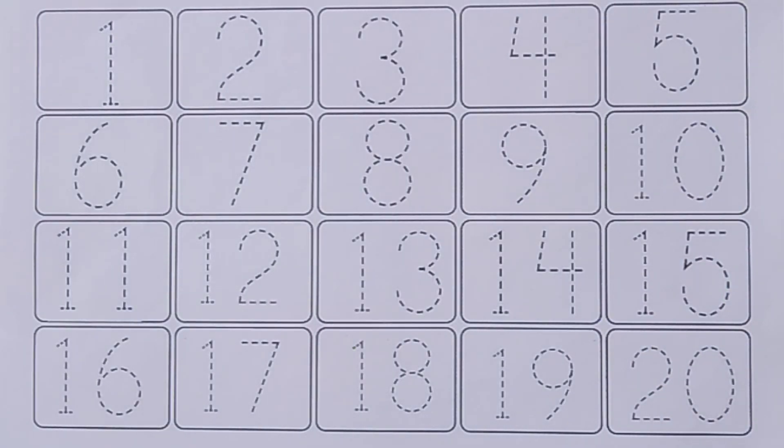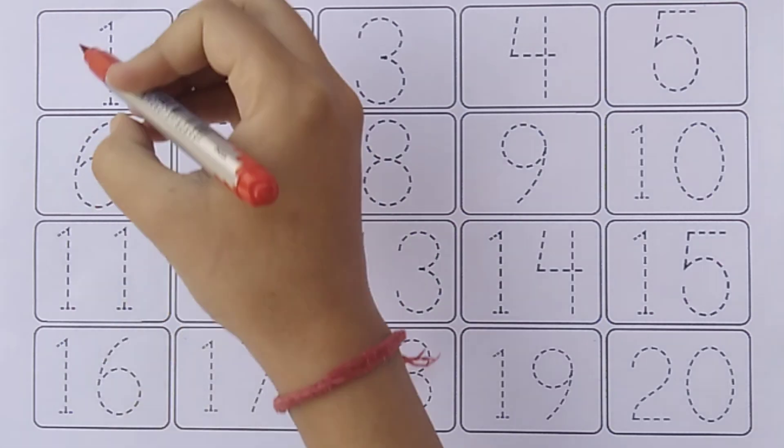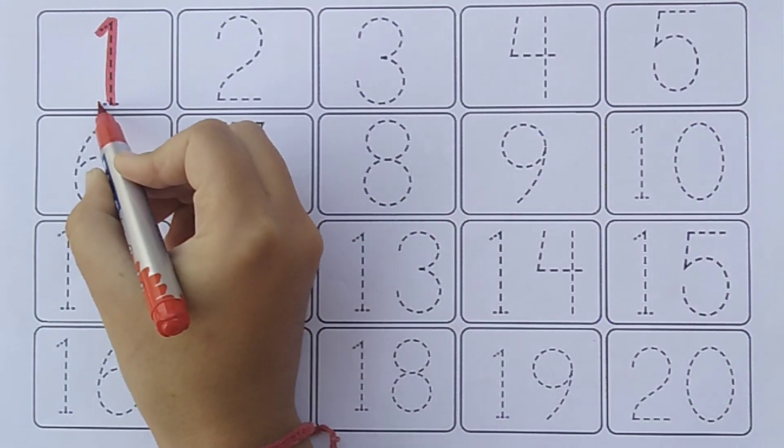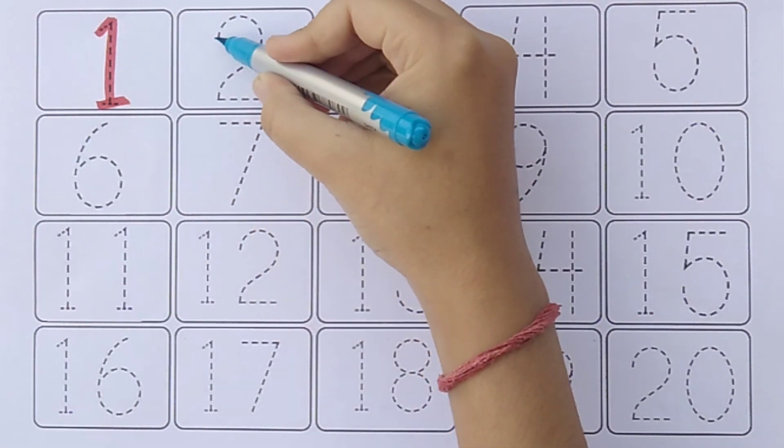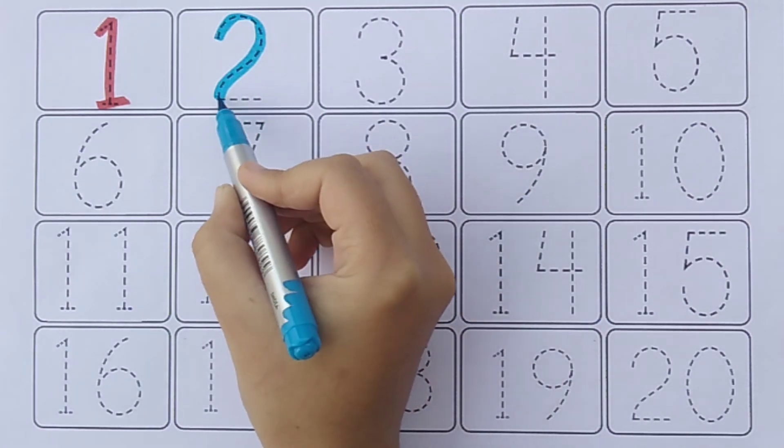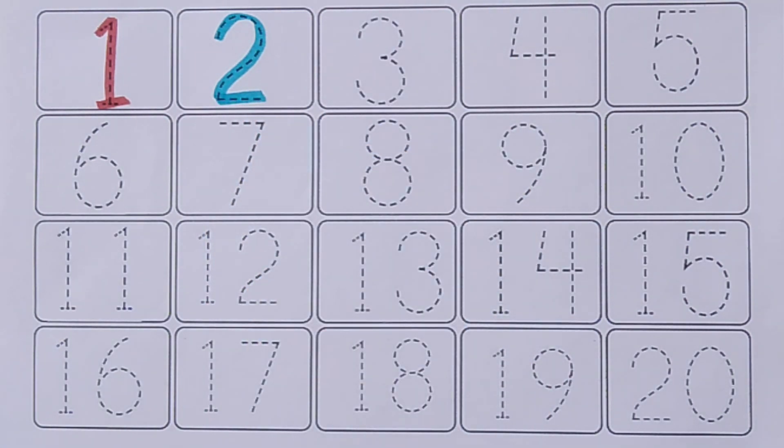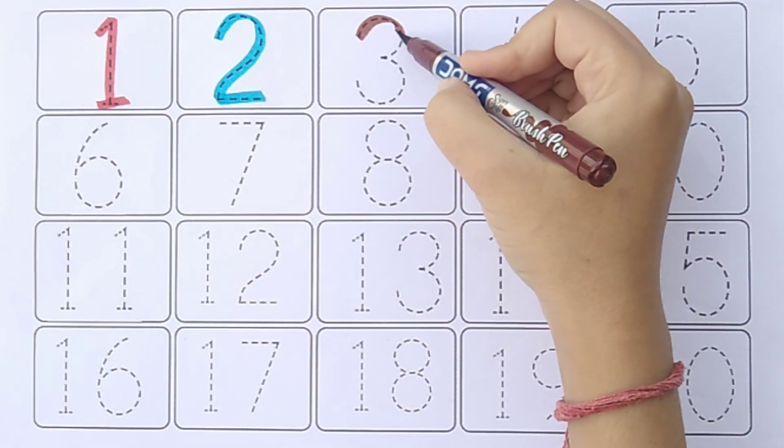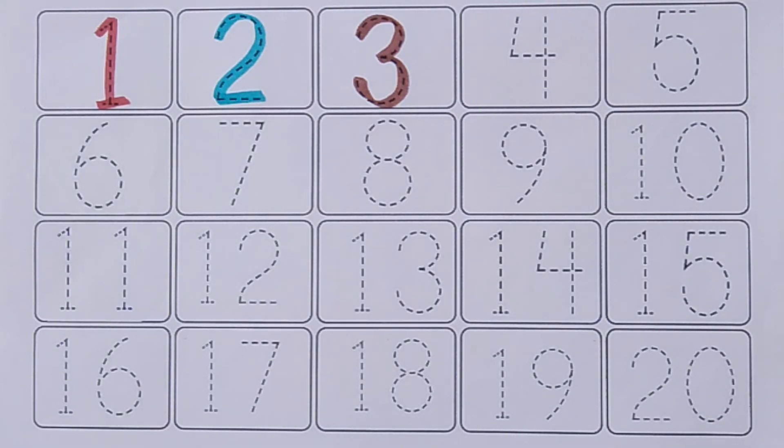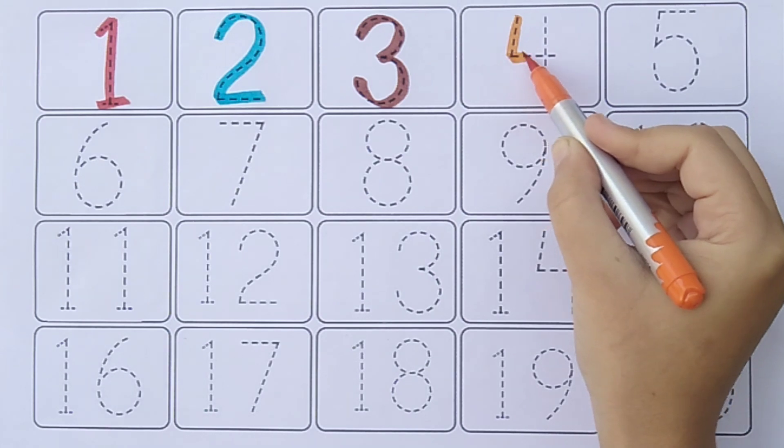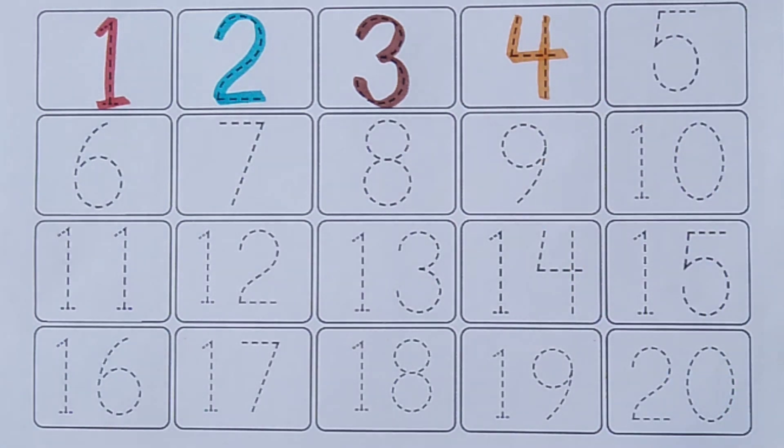Now, we learn 1, 2, 3. Red color. 1. Sky blue color. 2. Brown color. 3. Orange color. 4.